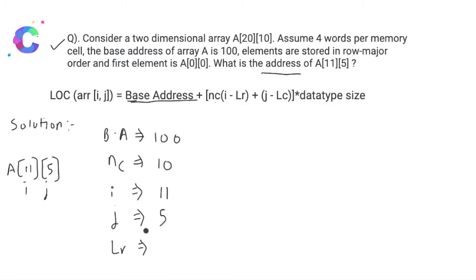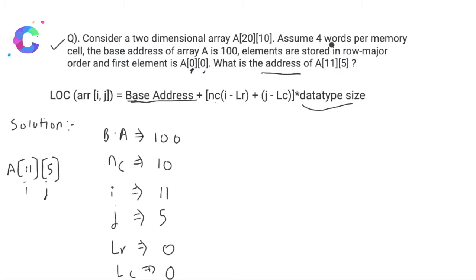LR is the lower bound of the main array — from where the array starts. From the question, the lower bound of the row is 0 and the lower bound of the column, LC, is also 0. The data type size is 4 bytes per memory word, so the data type size is 4.